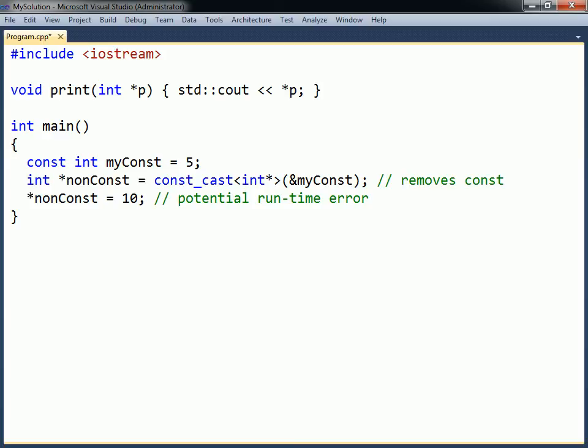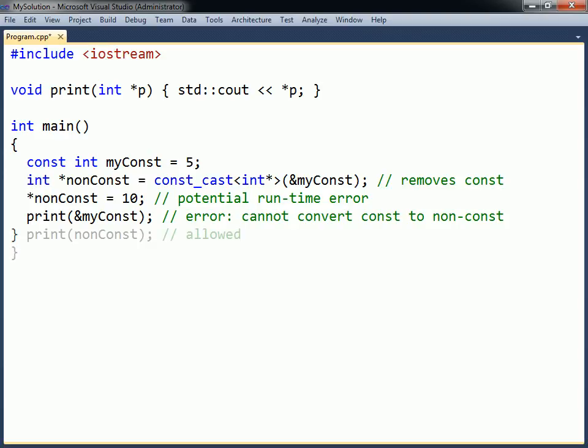This could occur for example if the constant was located in a section of read-only memory. Const cast is instead used mainly when there is a function that takes a non-constant pointer argument, even though it does not modify the pointy. The function can then be passed a constant variable by using a const cast.